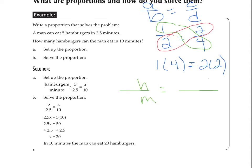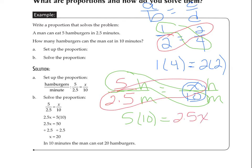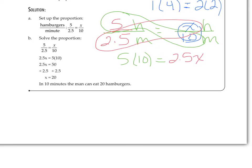In this question, hamburgers are being compared to minutes. So I'm going to start with fraction bars and put units in — hamburgers comparing to minutes, the same units on both sides. The first part of the story says a man can eat five hamburgers in two-and-a-half minutes, so those numbers go here: 5 hamburgers in 2.5 minutes. The second part tells us: how many hamburgers can the man eat in ten minutes? We know ten minutes, so that goes on the bottom. We don't know how many hamburgers, so that will be our variable X.